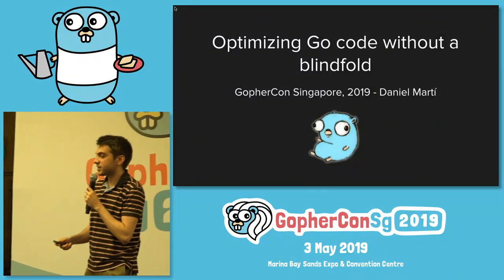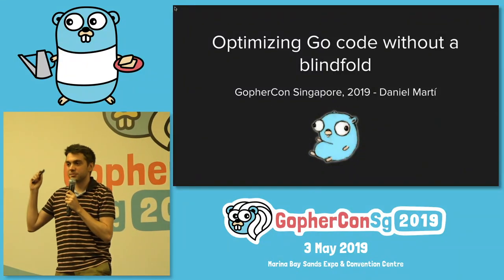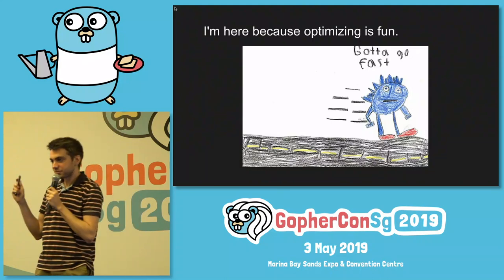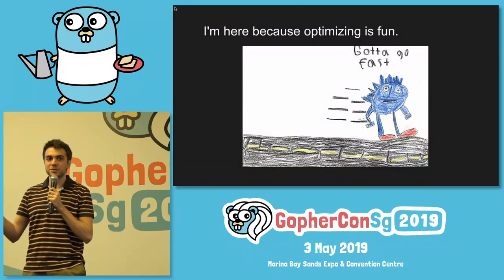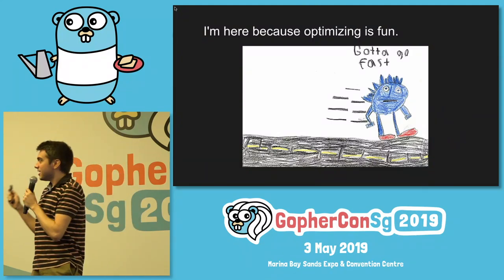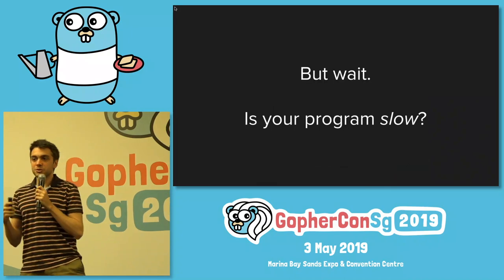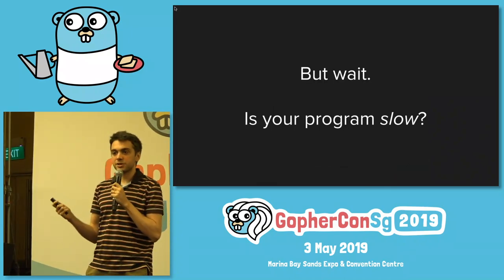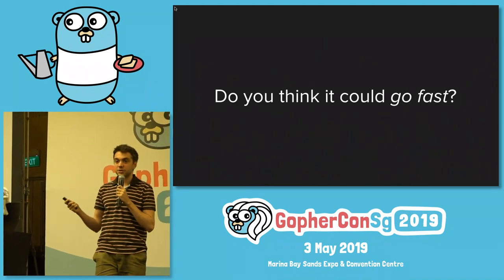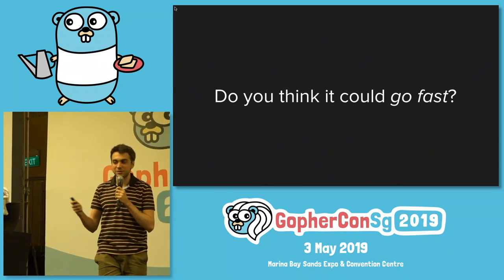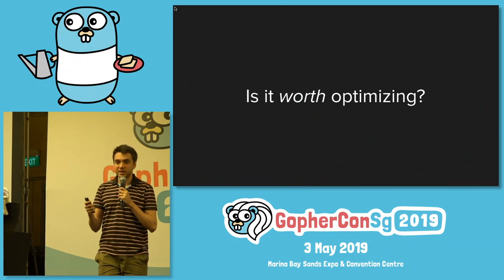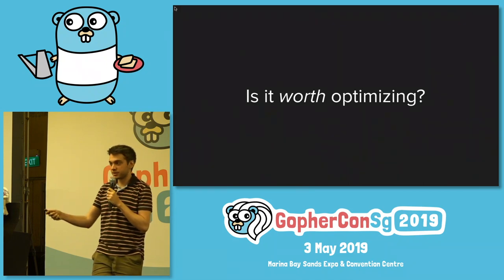Hello everybody. I'm here because optimizing Go code is fun. But the first question you should be asking yourselves is: is your program actually slow? By which we mean, do you think it could go faster? And lastly, is it worth optimizing? Because it's a trade-off between time invested and other things like simplicity, as Dave explained.